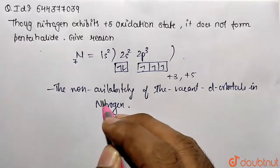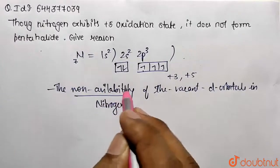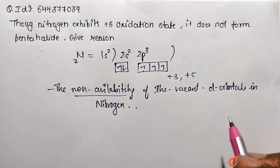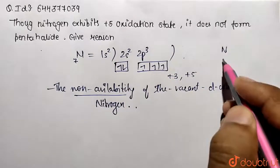This is our answer. The basic statement is that all elements of the second period do not have availability of d-orbitals. But if you compare with third period elements, like nitrogen's counterpart phosphorus,